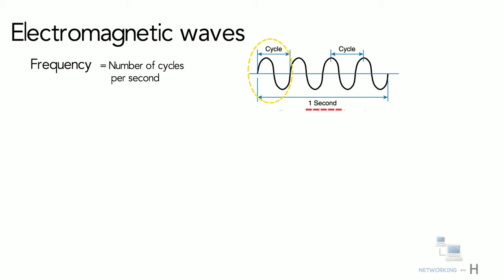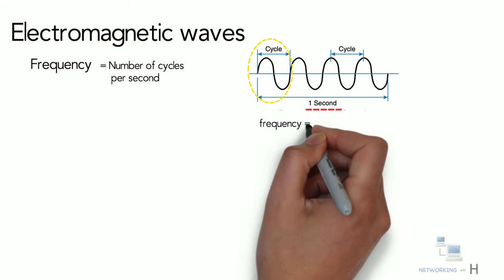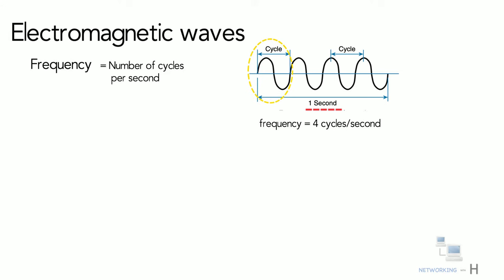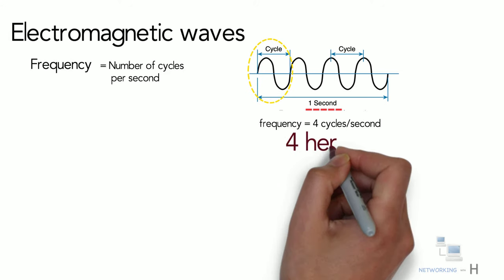Just like the ripples on a pond after a stone has been thrown into it, all the little ripples that pass through a certain point would indicate a frequency. Suppose that in a second, the signal completed four complete cycles. So its frequency will be four cycles per second, or you can say four hertz.